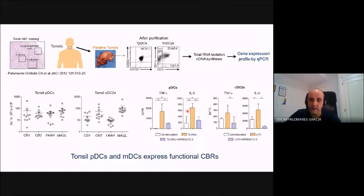Interestingly, plasmacytoid dendritic cells and also type 2 conventional dendritic cells express functional cannabinoid receptors, as you can see here. WN is able to suppress the production of pro-inflammatory cytokines induced by specific toll-like receptor ligands, both in PDCs but also on type 2 conventional dendritic cells.